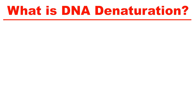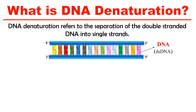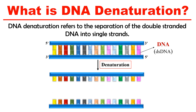So first, what is DNA denaturation? DNA denaturation is simply the separation of two strands of the DNA. As you can see, this is a typical DNA molecule which has two strands — strand 1 and strand 2. During DNA denaturation, these two strands separate out. This separation of double-stranded DNA into single strands is known as DNA denaturation.